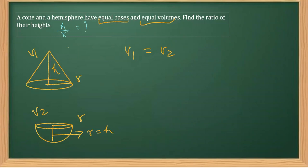Now what I'm going to do is replace this V1 with the volume of the cone, which you must know is 1/3 π r² h. And for the volume of a hemisphere, we have the formula 2/3 π r³.